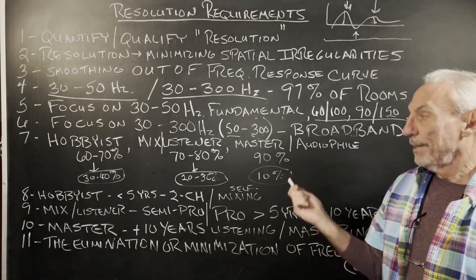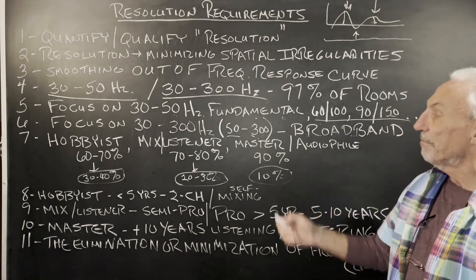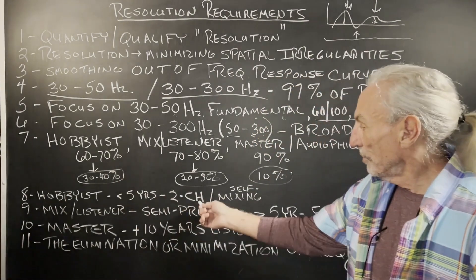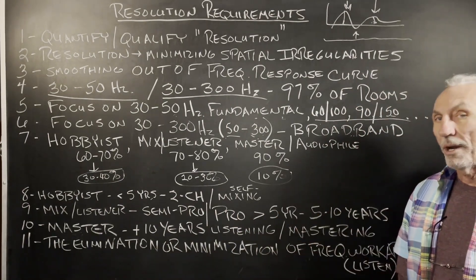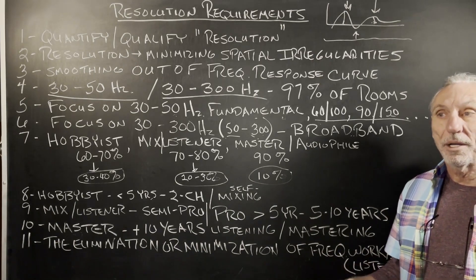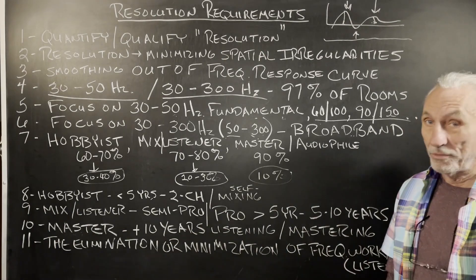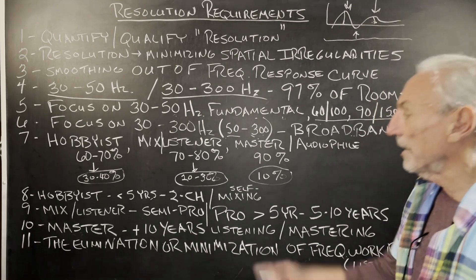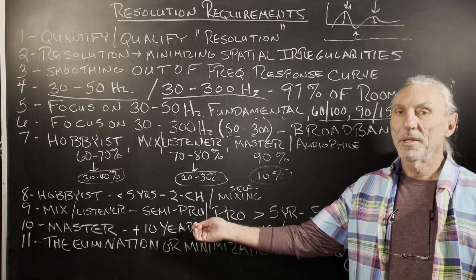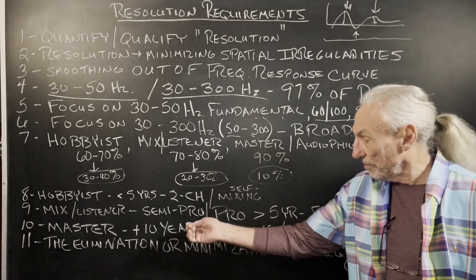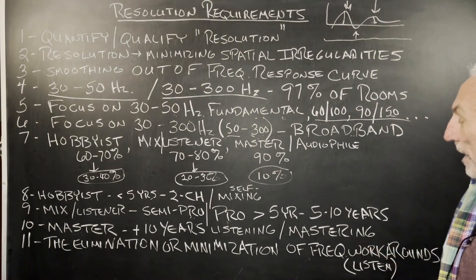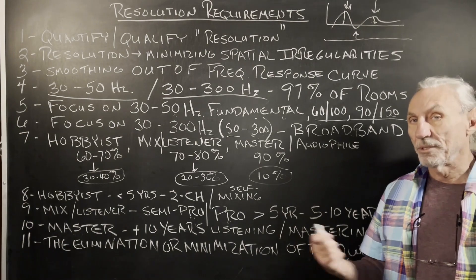I came up with three categories. First: Hobbyist — a guy just starting out, less than five years listening, probably just mixing for himself, not generating revenue, but has worked in a room long enough to realize treatment is needed. Second: Mix and Listener — more than five years, semi-pro, maybe making a little money, with a goal to transition from hobby to profession. Listening five to ten years — that's what we see.